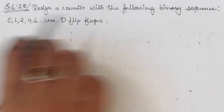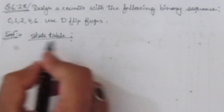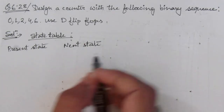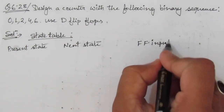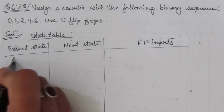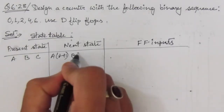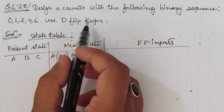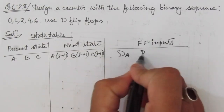We have to use D flip-flops. First of all, we will make the state table for this design. Here we will have present state, next state, and respectively for this present state and next state, we will find out the flip-flop inputs — DA, DB, and DC. The present states are A, B, and C. The next states are A(t+1), B(t+1), and C(t+1).